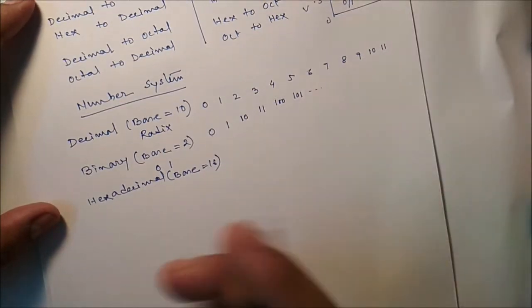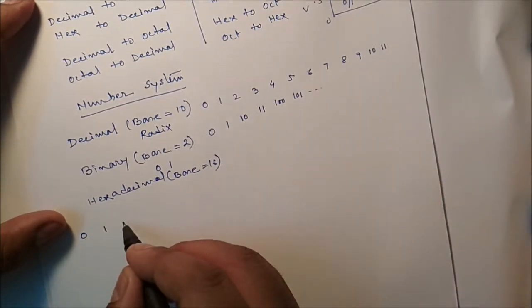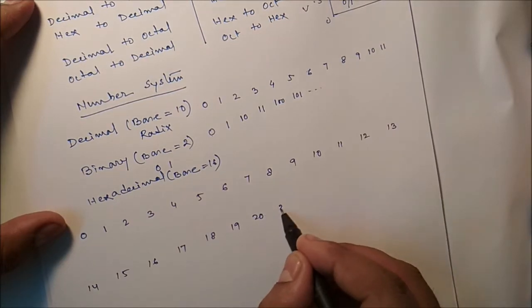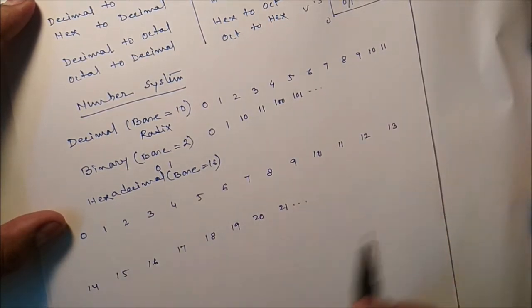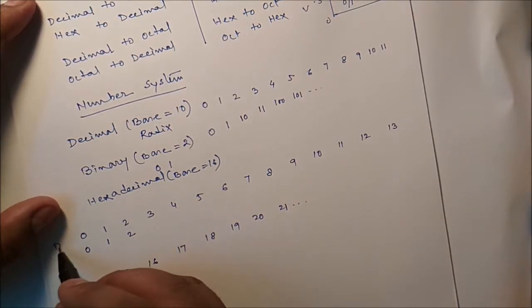So base is 16 means 16 distinct symbols are there. So we can see here properly. Suppose the numbers are 0, 1, 2. So this is the decimal value. This is the hexadecimal part.